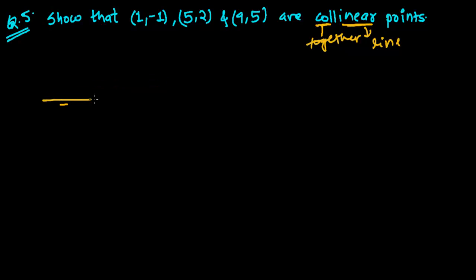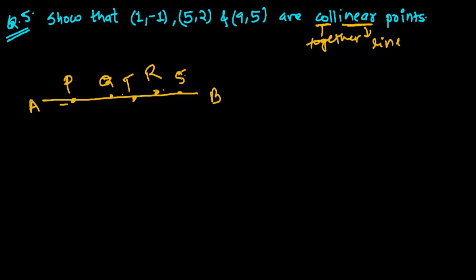Suppose this is a line called AB. Now this is point P, this is point Q, this is point R, and suppose here S and T. All these points P, Q, R, S, T are called collinear because they all come under the same line AB.